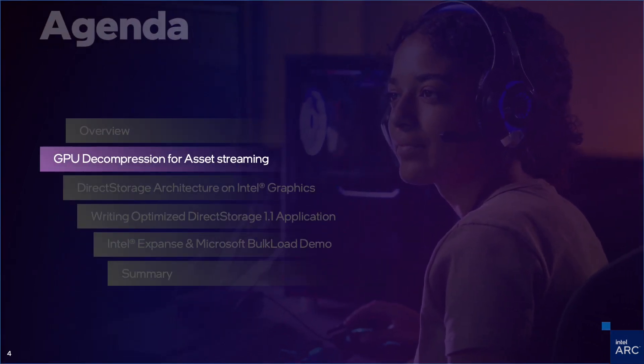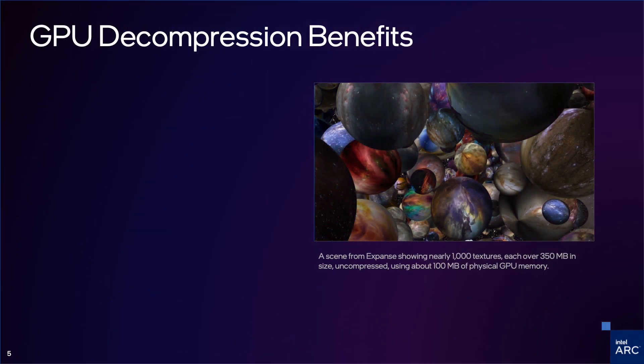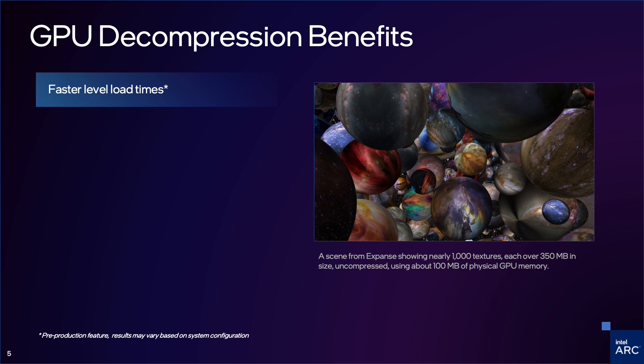Let's explore the advantages of utilizing GPU decompression and asset streaming in gaming. Direct Storage 1.1 includes a brand new GPU decompression technology. The benefits of this technology include faster level load times. Game assets are loaded directly from an NVME solid state drive to the GPU's memory, bypassing the system memory entirely. This process is faster and more efficient, allowing for more rapid and seamless asset loading and rendering. This results in smoother gameplay and reduced load times because games will stream just what the player sees, just in time.